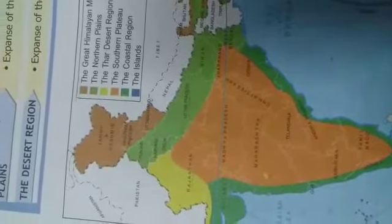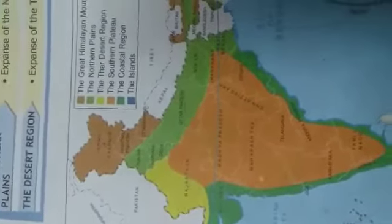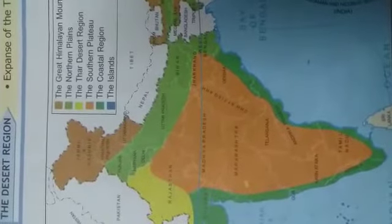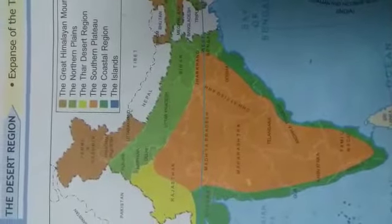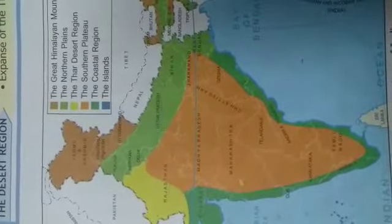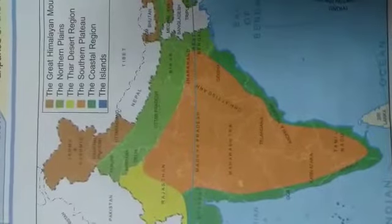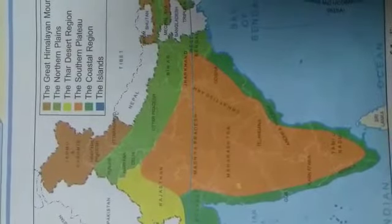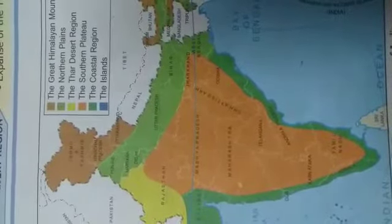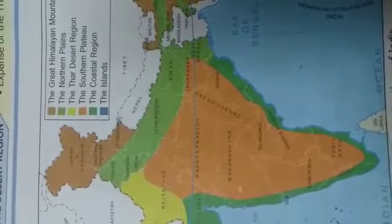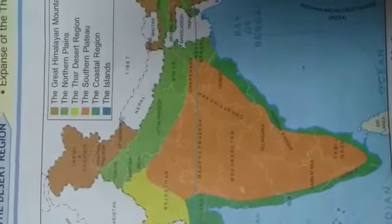Each of the states has its own culture, language, art, architecture and lifestyle. People of different religions, castes, gender and sections of the society live in harmony. This makes India a classic example of unity in diversity.